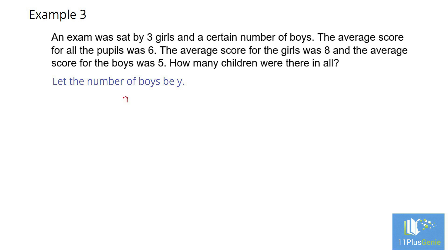We will use a little table in which we have mean, count and total. For all pupils, the mean equals 6 and the count equals 3 plus Y. For girls, mean equals 8 and the count equals 3.